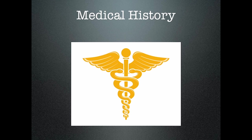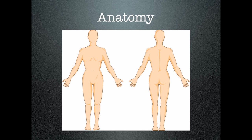Medical history includes such things as allergies, medicines you're taking, any illnesses you've had in the past, surgery in the past — anything that could be related to the surgery you're going to have or anticipating. The other key aspect is the anatomy, and particularly the anatomy that relates to the procedure or body part you're thinking about having.